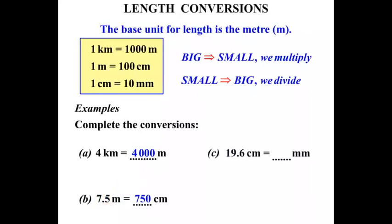The next one, 19.6 centimeters equals how many millimeters? There are 10 millimeters for a centimeter, so we're dealing with a factor of 10. We're changing from centimeters to millimeters, from big to small, so we multiply by that 10. And 19.6 times 10 is 196.